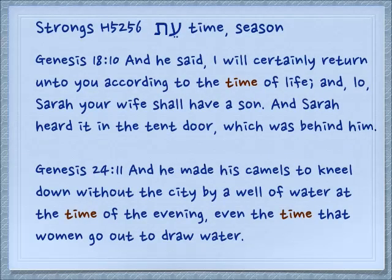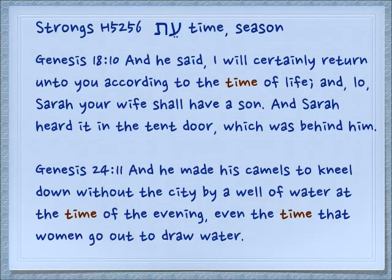The most common word is 'et.' This et is for the time or the season. Genesis 18:10: 'And he said, I will certainly return unto you according to the time of life, to the season of life. And lo, Sarah, your wife will have a son.' And Sarah heard it in the tent door which was behind him. And we know she thought it was quite funny — she laughed.